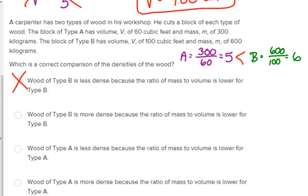Now, wood of type B is more dense because the ratio of mass to volume is lower for type B. Well, yes, B is more dense, but that reason is not correct. That ratio is not lower. The ratio is greater. That's why it's more dense. So, that one's not correct. Wood of type A is less dense because the ratio of mass to volume is lower. That makes sense. Let's check that last one just to make sure we haven't made a mistake. Wood of type A is more dense. Well, we know that's not right. Okay? Because it is definitely less dense. Okay? Make sense?